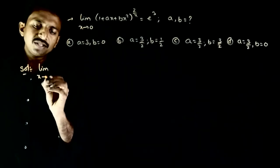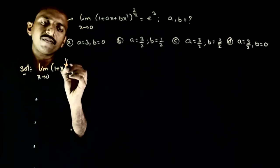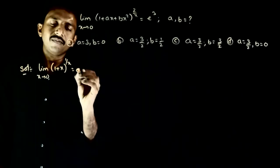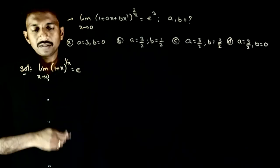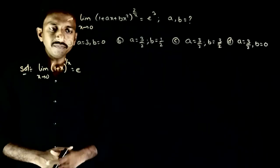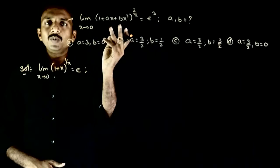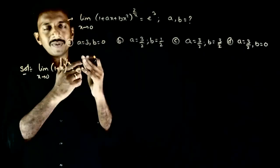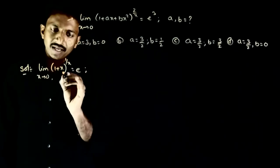Limit x tends to 0, 1 plus x whole power 1 by x hai to the value is equal to e. So the value of this limit is equal to e. So jo bhi muha limit diya I will try to convert my limit into this. So is limit mein kya hona chahi e aane ke liye.